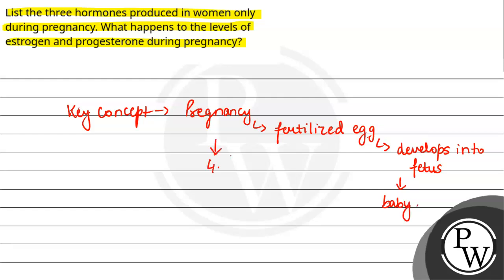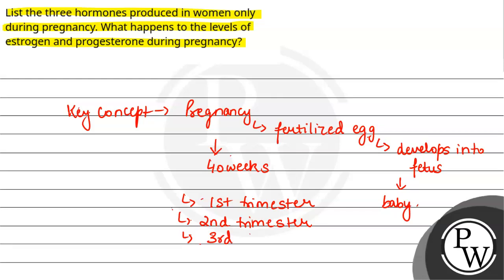An average pregnancy जो होती है वो 40 weeks की होती है, इसमें 3 trimesters होते हैं. First trimester में implantation and fertilization होता है. Then आता है second trimester, and third trimester में जो baby होता है वो almost fully developed हो जाता है - at the end of third trimester, almost all the organs are fully developed.